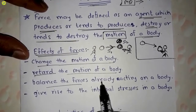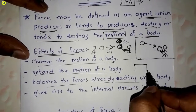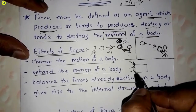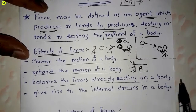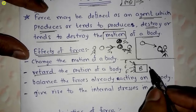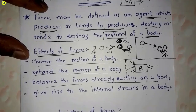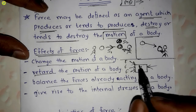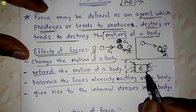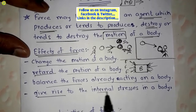The third effect is: balance the forces already acting on a body. Suppose here is a body and on this body there are multiple forces acting. When we apply an equivalent force in the opposing direction, due to this equivalent force all the forces balance each other and the body remains in its position.